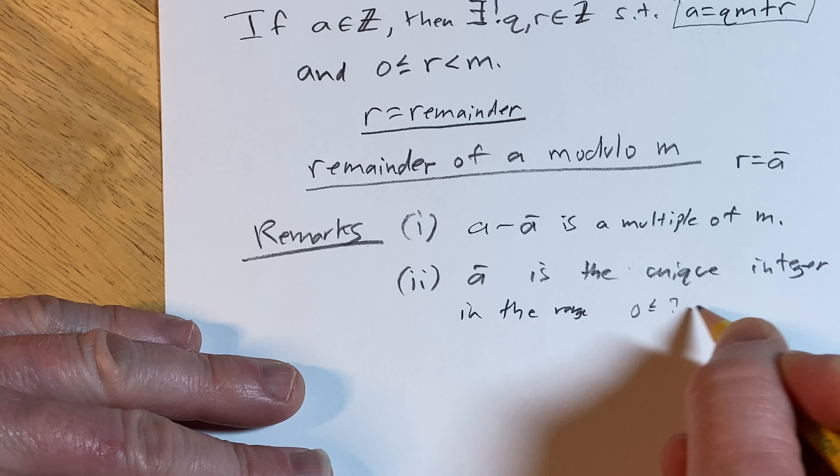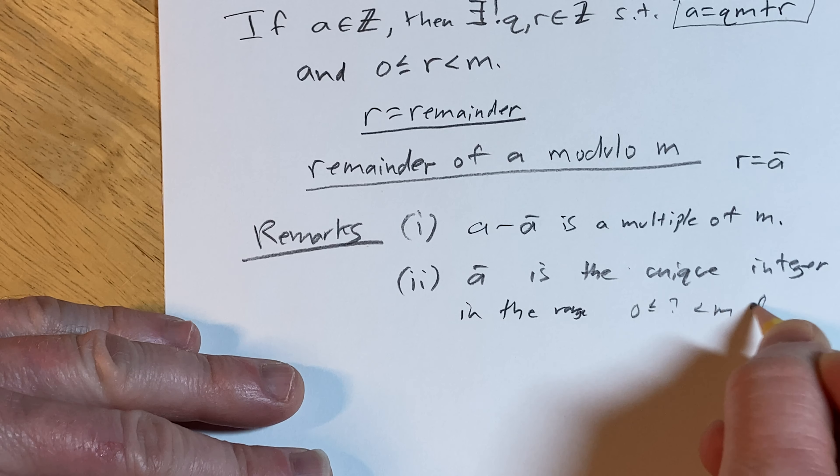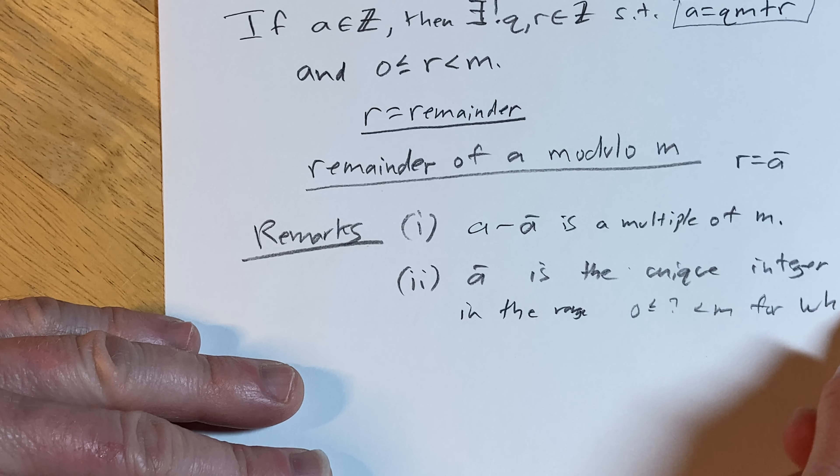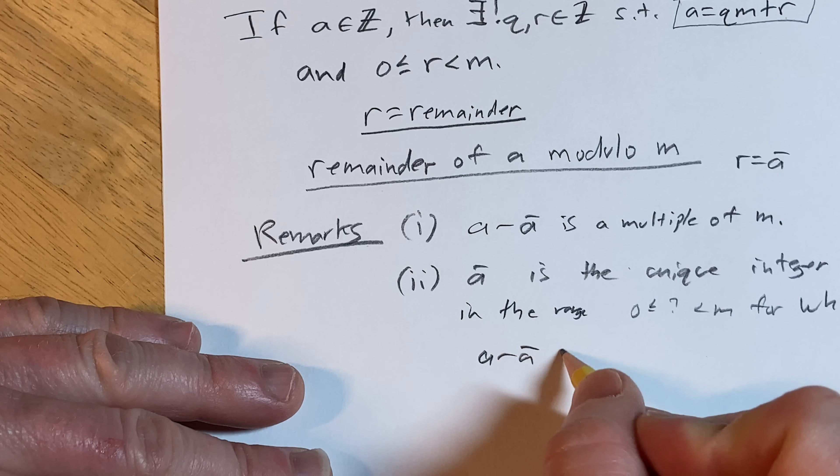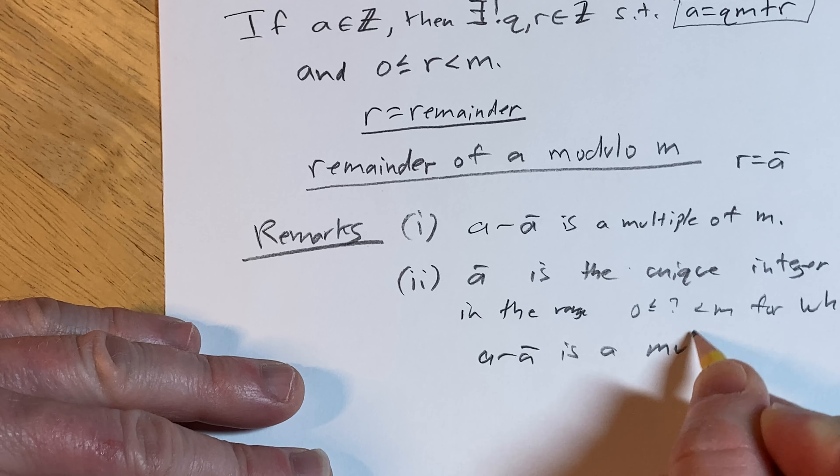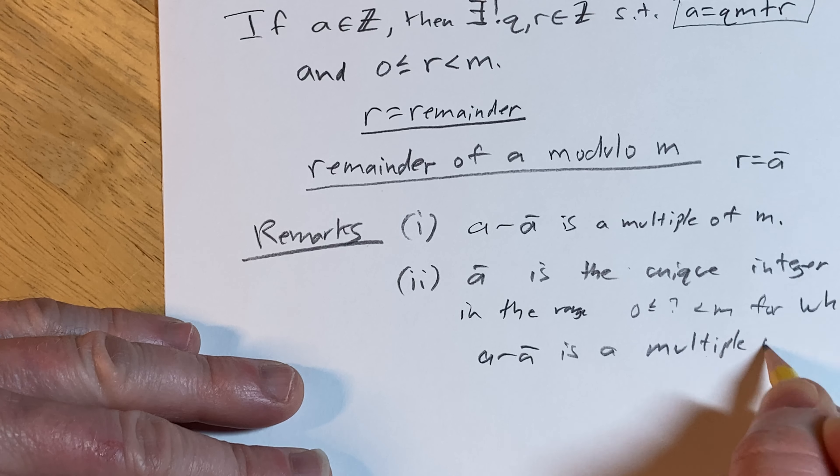So here in this range, for which A minus A bar is a multiple of M.